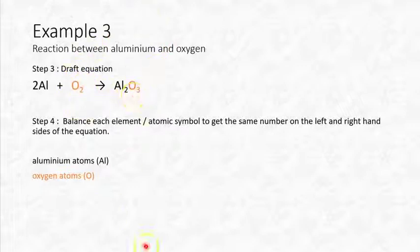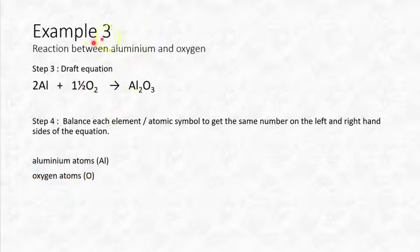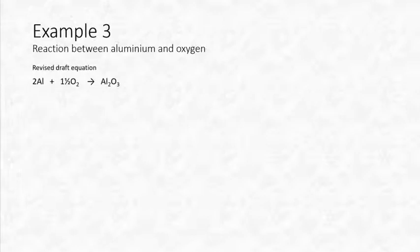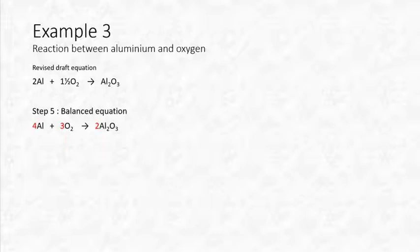To balance the oxygen, we use one and a half O₂ molecules, giving three oxygen atoms on the left. The revised equation is: 2Al + 1½O₂ → Al₂O₃. But we don't like halves in equations, so we double everything again, giving: 4Al + 3O₂ → 2Al₂O₃. Notice we've doubled the amount of each substance in the equation.